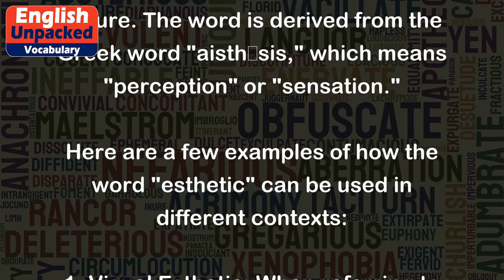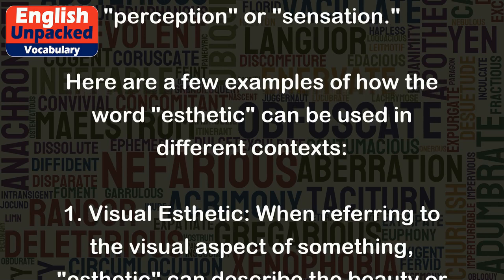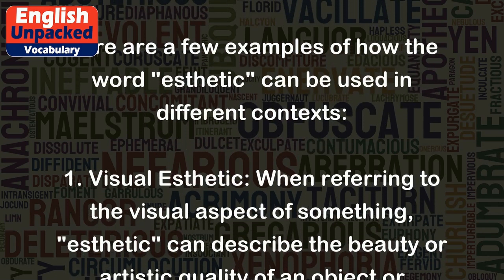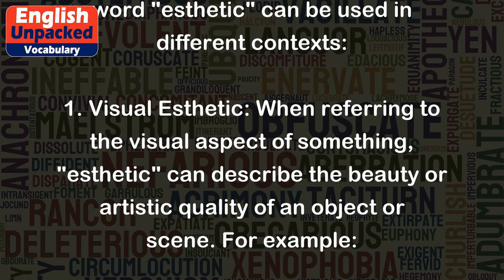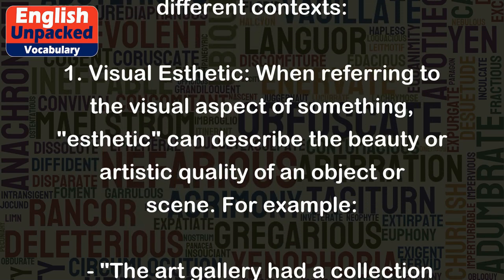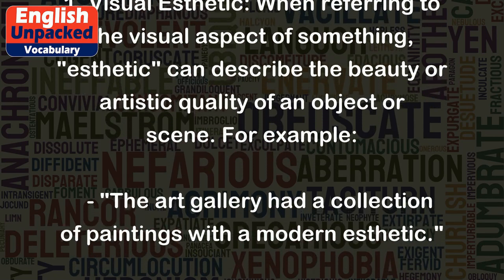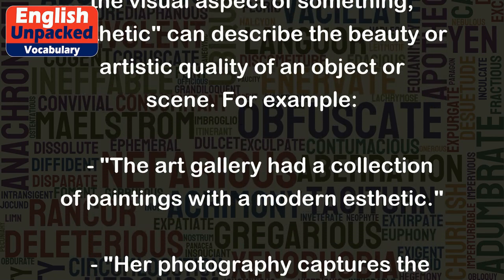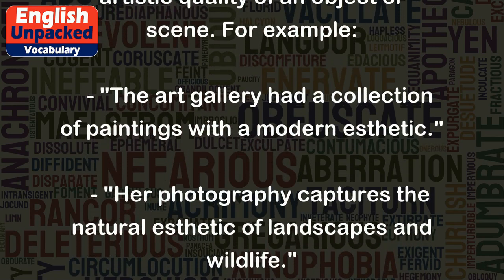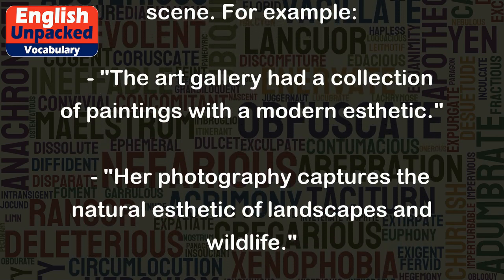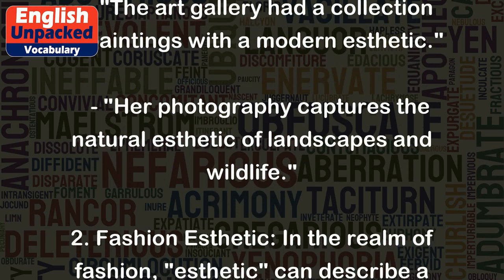Here are a few examples of how the word aesthetic can be used in different contexts. 1. Visual aesthetic: when referring to the visual aspect of something, aesthetic can describe the beauty or artistic quality of an object or scene. For example, the art gallery had a collection of paintings with a modern aesthetic. Her photography captures the natural aesthetic of landscapes and wildlife.